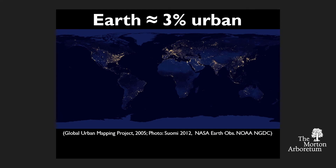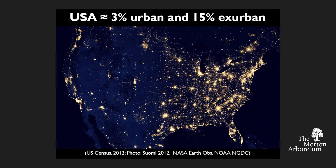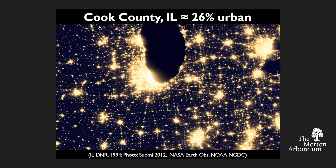About 3% of the earth is considered urban right now, but there's a larger area that might also be considered ex-urban. These are some nighttime images — this one in particular is the United States. As much as 15% of the total United States might be considered that ex-urban area.